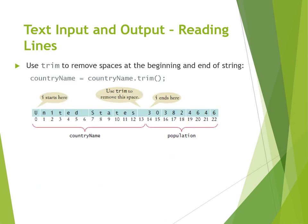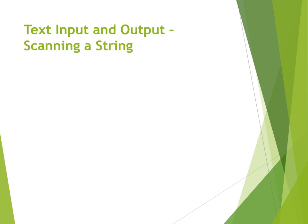In the next step, we try to trim the strings extracted in the previous step and make them cleaner by removing spaces. The `trim()` method can be called on any string like `countryName`, and it removes spaces at the beginning and end of the string. So if "United States" has a trailing space, calling `trim()` removes it.